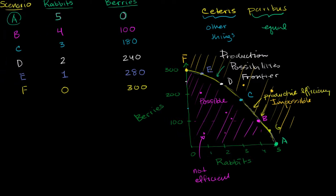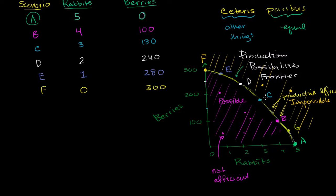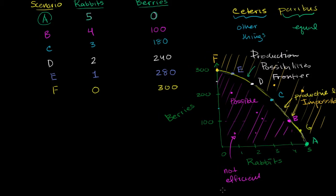Another way to think about productive efficiency is that as soon as you're at any point on that curve, if you want any more of one of these things, you have to give up some of the other. For example, if you're at point C and you want more rabbits, you're going to have to give up some berries. Or if you want more berries, you're going to have to give up some rabbits. That's true of any point on the production possibilities frontier.